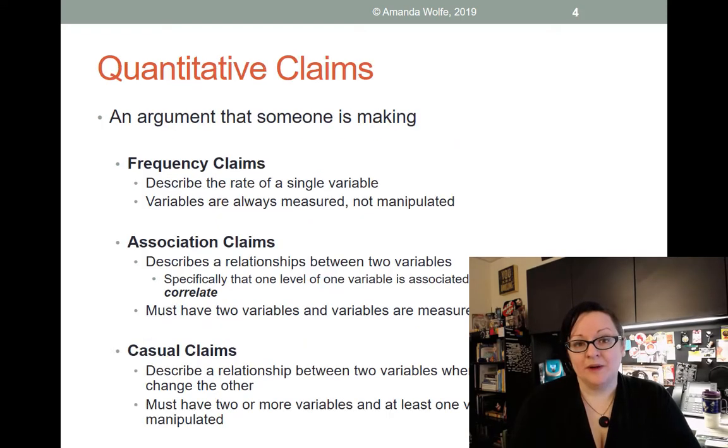If you think about quantitative methods, you can usually divide up the questions that we ask, or the types of claims we're trying to establish, into three main categories: frequency, association, and causal.